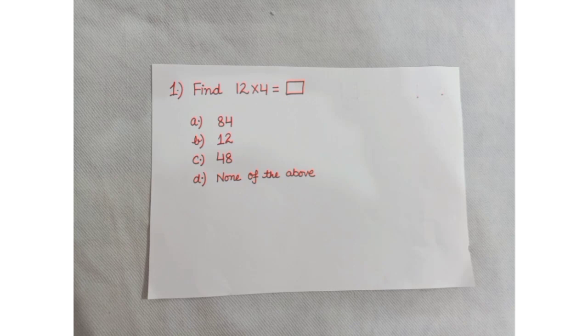Students, now question for you. Find 12 into 4. A: 84. B: 12. C: 48. D: none of the above. Students, today we have found by various methods that 12 into 4 is equal to 48. So the right answer is option C.